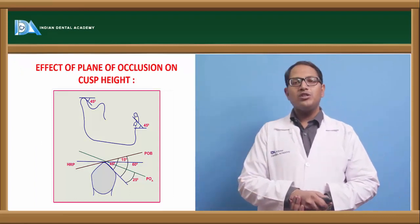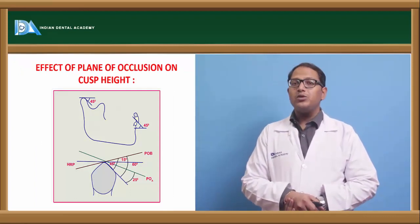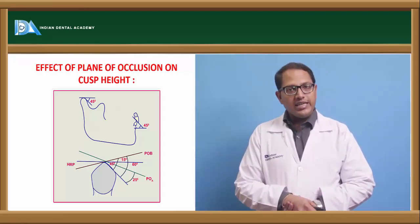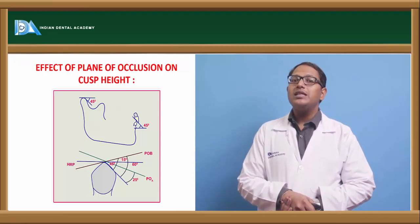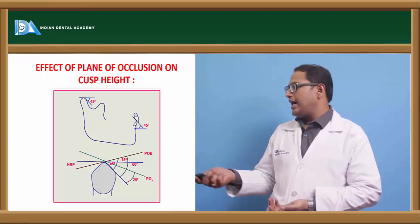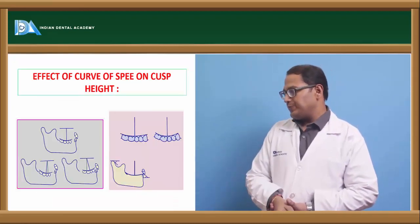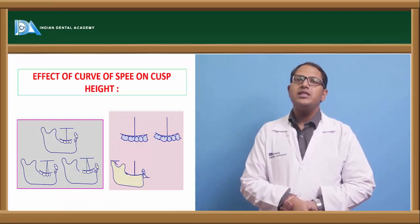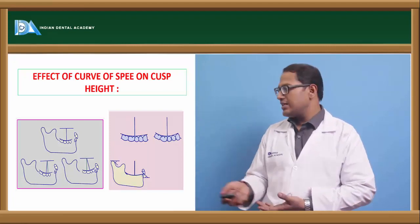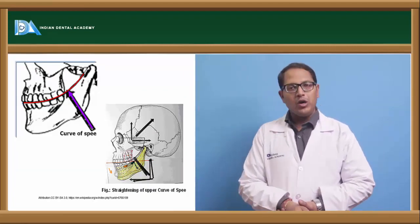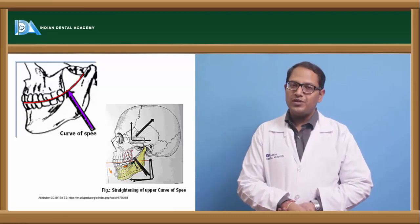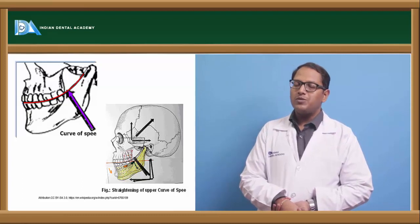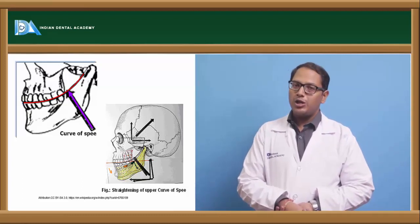Effect of plane of occlusion on cuspal height. What will happen if plane of occlusion increases? The cuspal height will decrease. Plane of occlusion decreases, the cuspal height decreases. That depends on the incisal guidance as well as on the curve of Spee. Curve of Spee increases, cuspal height increases. Similar is with the case: curve of Spee decreases, the cuspal height will also decrease. The curve of Spee passes from the tip of the canine mandibular to the molar and also from the buccal cusps of the premolars and molars, passing through the middle of the condyle.